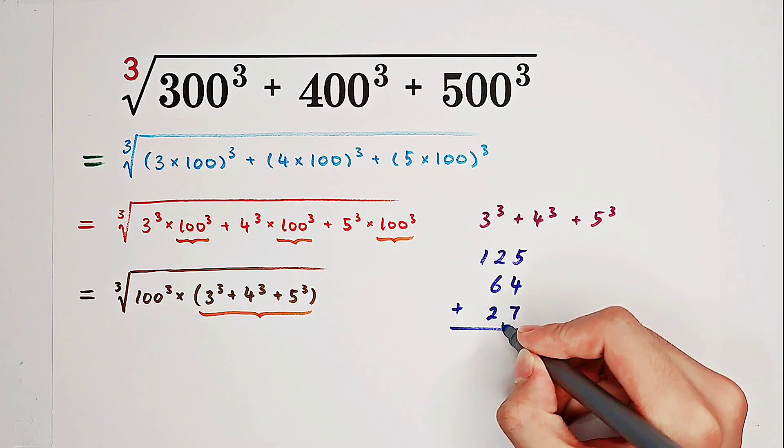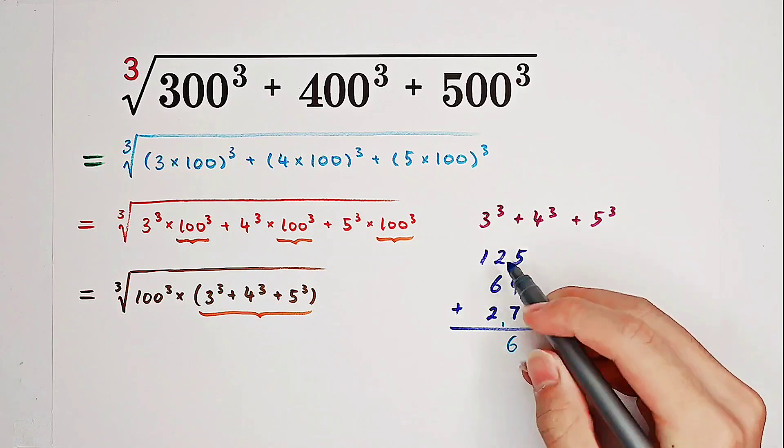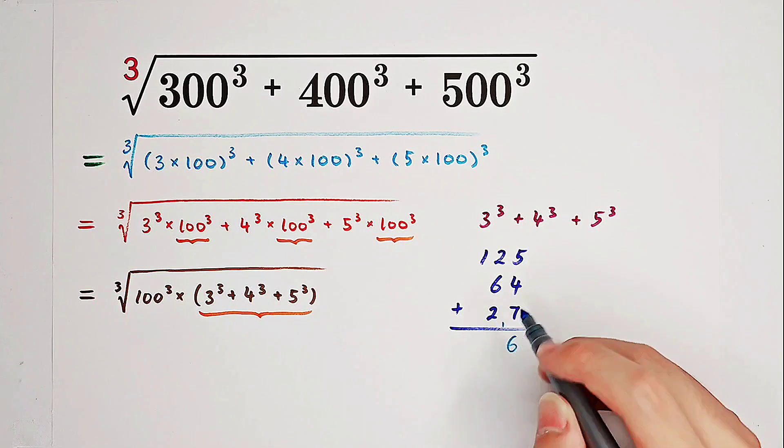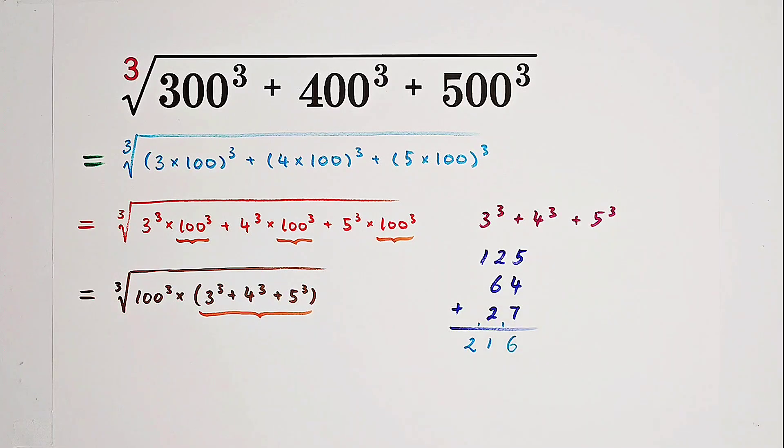So the answer is going to be, this is 16, this is 10. 10 plus 1 is 11, and 1 plus 1 is 2. So the answer is 216.